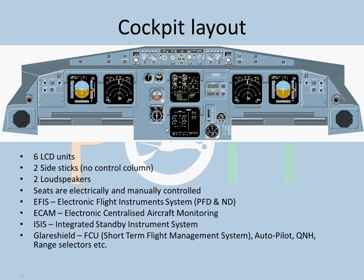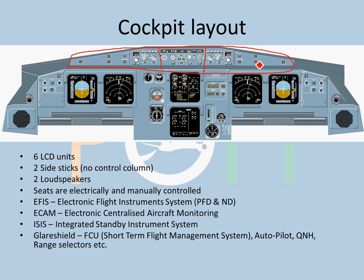The glareshield is another important part of the cockpit layout. In the middle of the glareshield sits the FCU — Flight Control Unit — used for short-term flight management. Here you can select heading, speed, altitude, vertical speed; autopilot and autothrust controls are there, as are approach controls. On the sides of the glareshield you have the QNH setting, ND range and mode selector, flight director pushbuttons, a chrono/clock, and the master caution and warning systems.